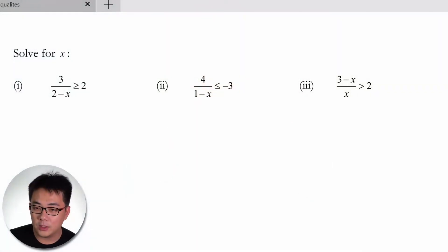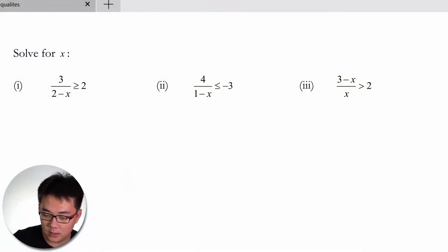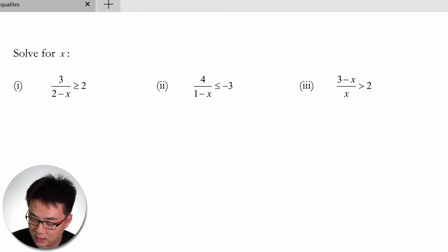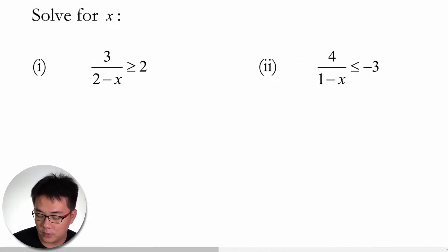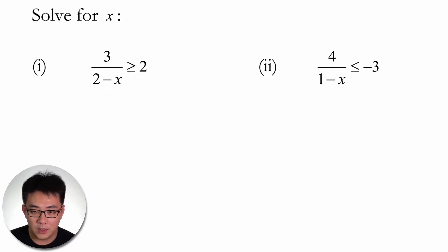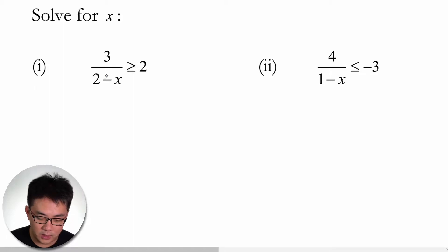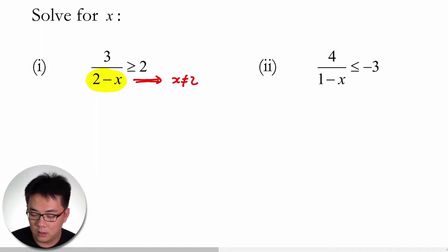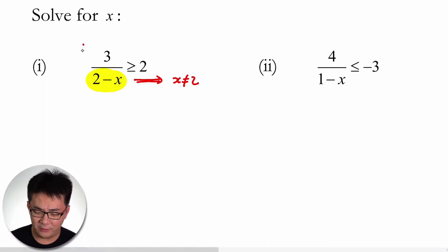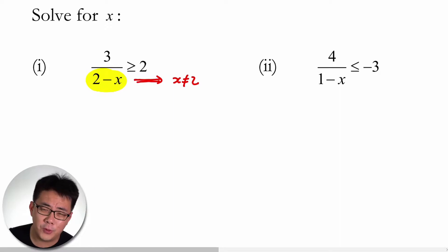Hi students, let's look at this question which was posted to me. This question is on inequalities — it's a pretty simple one as we have already covered most of it in school. So let's see how we can solve this efficiently. You're given that 3 over (2 minus x) is bigger than or equal to 2. First, take note that x cannot equal 2, because that would make the denominator 0, which is undefined.